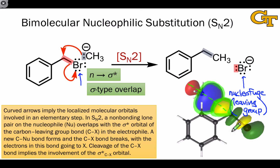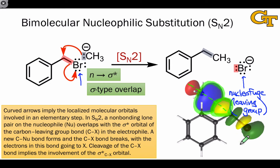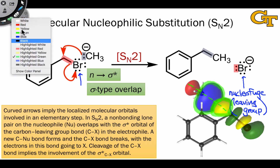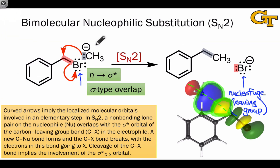The nucleophile can't approach from the front or from the side or any other orientation. It has to come from behind the electrophilic carbon in order for the orbital overlap to be effective. This is a case where viewing the localized molecular orbitals gives us great insight into the nature of the elementary step, which has stereochemical implications that we'll explore in a later lesson.